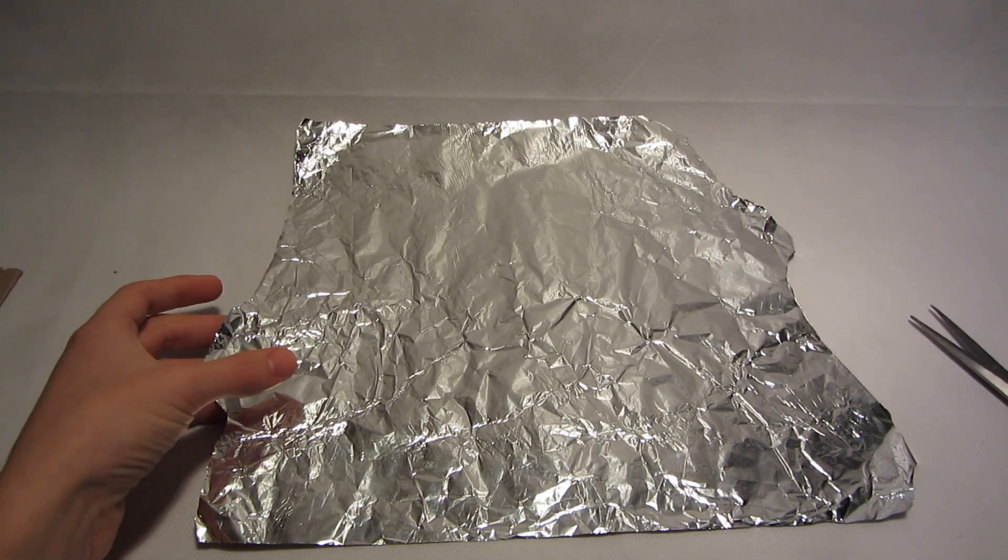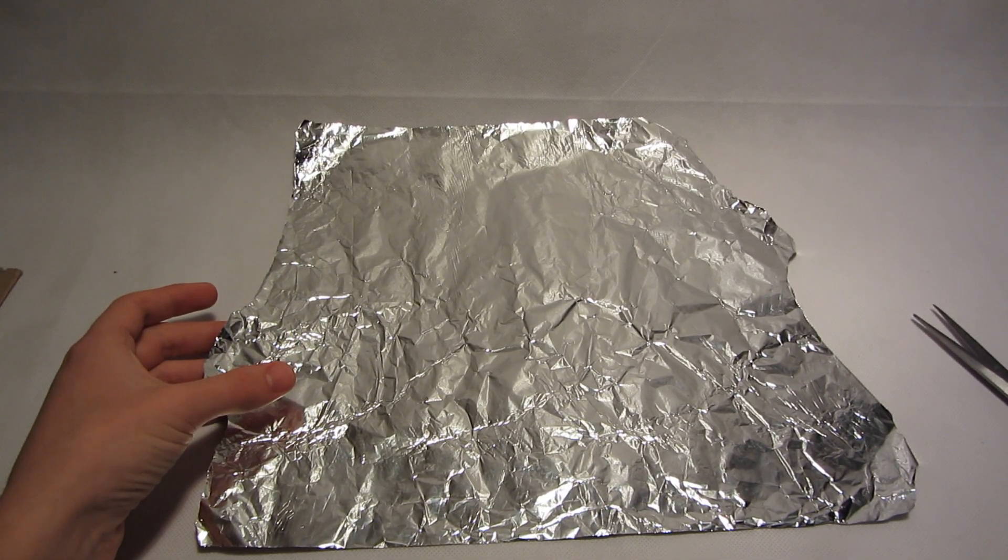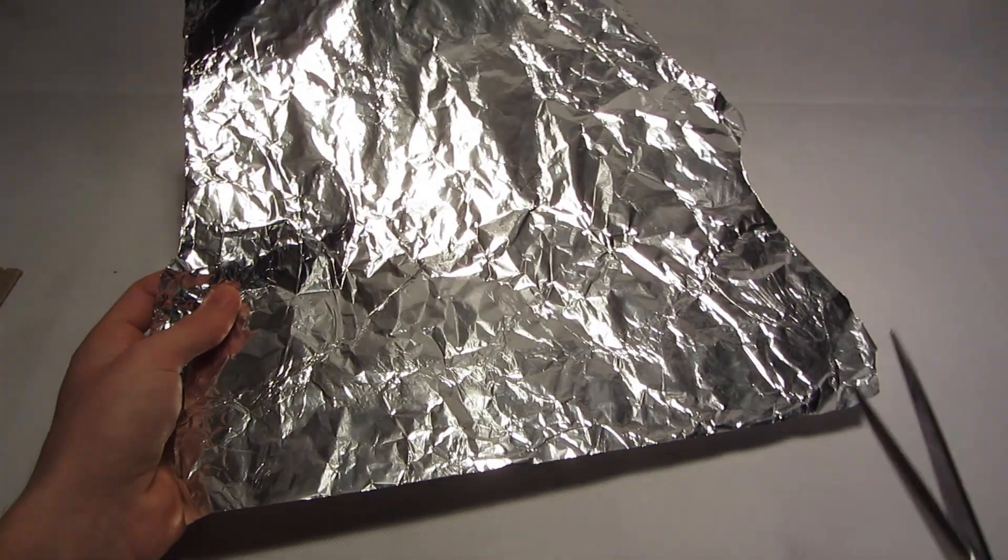Now take the aluminum sheet and cut out two straight strips. These will be our rails.